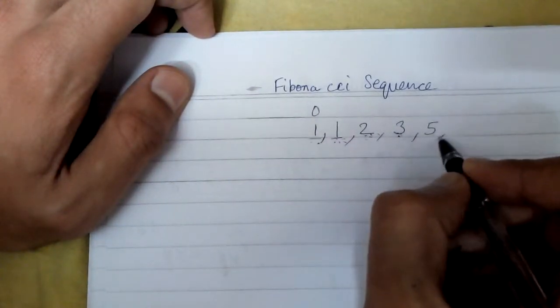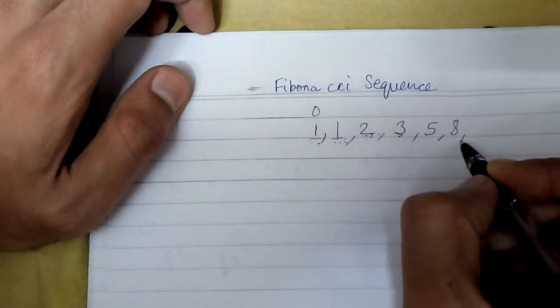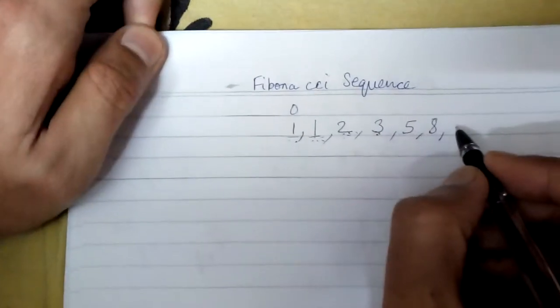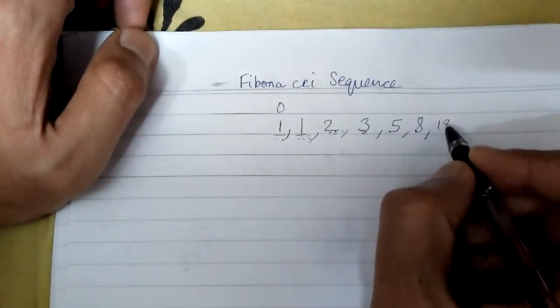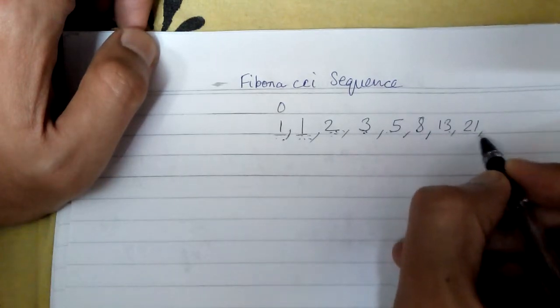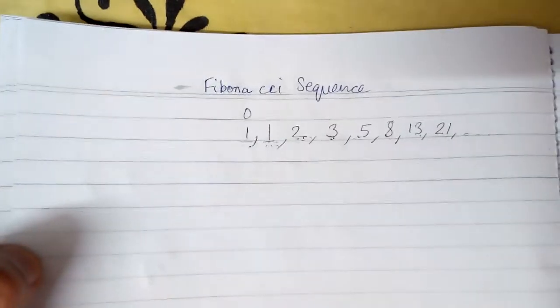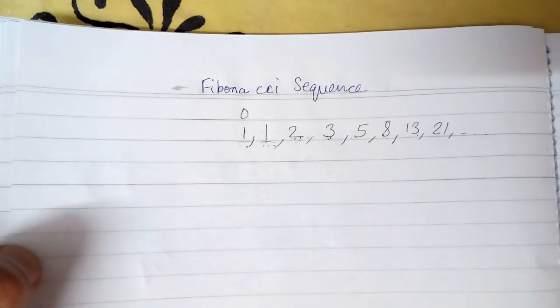That is 2 plus 3 which is 5, 3 plus 5 equals 8, 5 plus 8 equals 13, 8 plus 13 equals 21, and so on. So hope you understood what is a Fibonacci sequence. Thank you friends, please like, share, and subscribe.